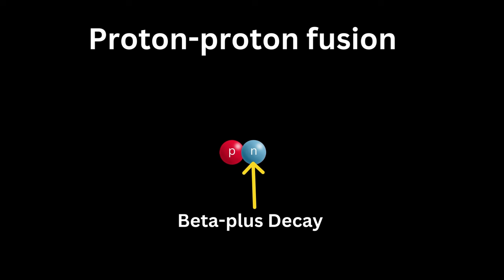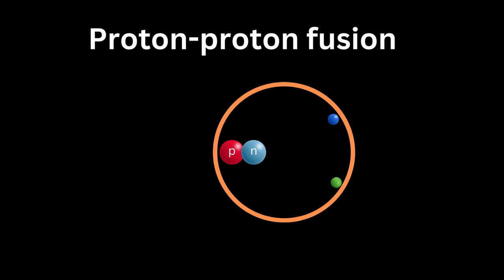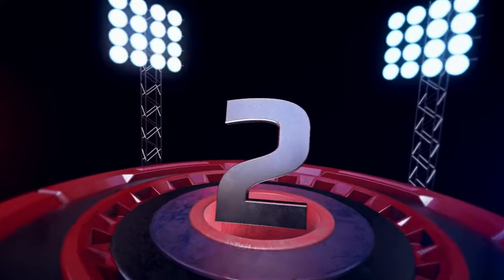The second proton is unaltered. Therefore, the end product of this reaction is a deuterium nucleus, which is one proton and one neutron.